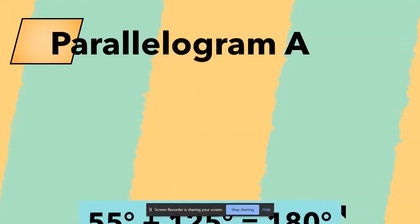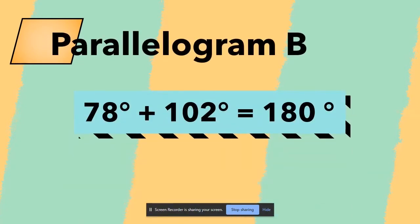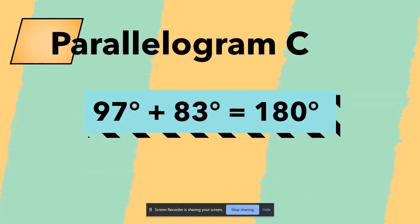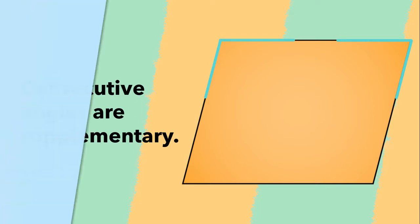For parallelogram A, we will add 55 degrees and 125 degrees to get 180 degrees. For parallelogram B, we will add 78 degrees and 102 degrees to get 180 degrees. Lastly, for parallelogram C, we will add 83 degrees and 97 degrees to get 180 degrees too. We now know that the property 'any two consecutive angles are supplementary' is true.